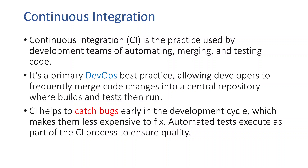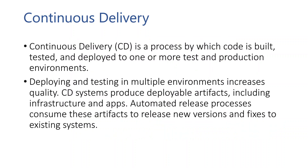Next, let's discuss Continuous Delivery. As the name indicates, Continuous Delivery is a process by which code is built, tested, and deployed to one or more test or production environments. Depending on the project, you might have multiple environments — a test environment, a UAT environment, a production environment. Based on your project requirement you will have different environments. The main process of Continuous Delivery is to build, test, and deploy code to one or more of those environments.